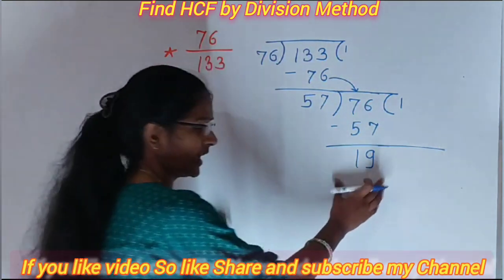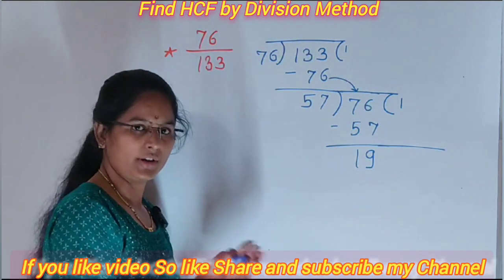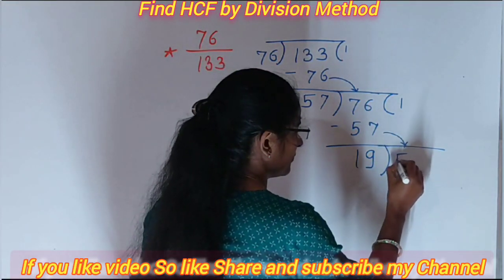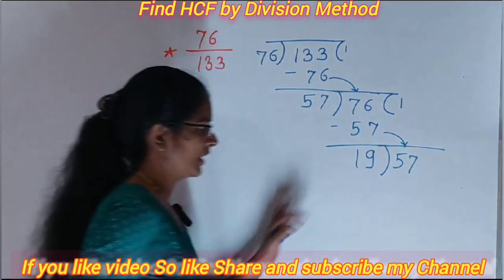When we subtract 57 from 76 we get 19. Again we didn't get zero remainder. That's why we divide again. Write this number here.